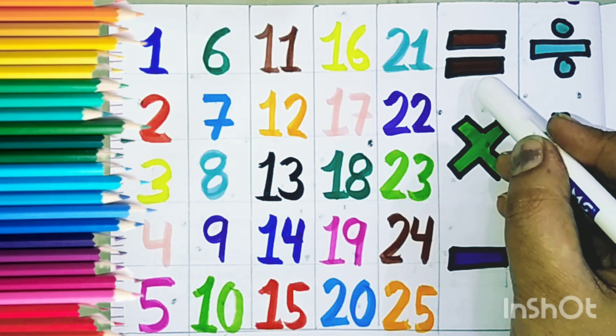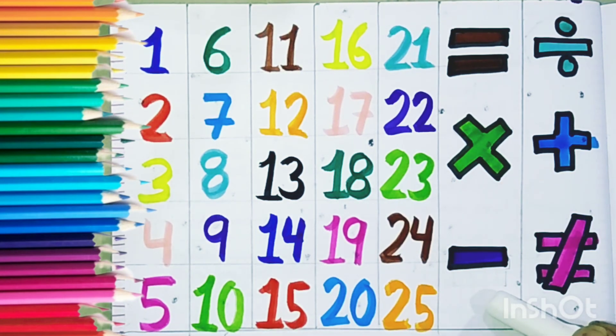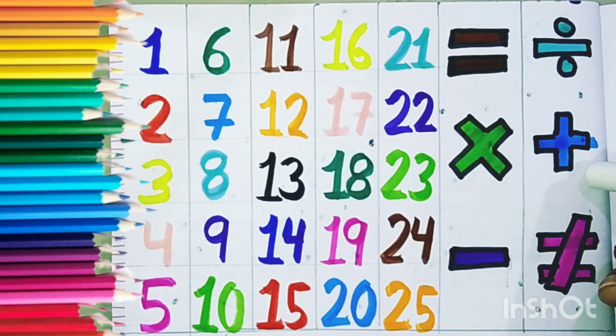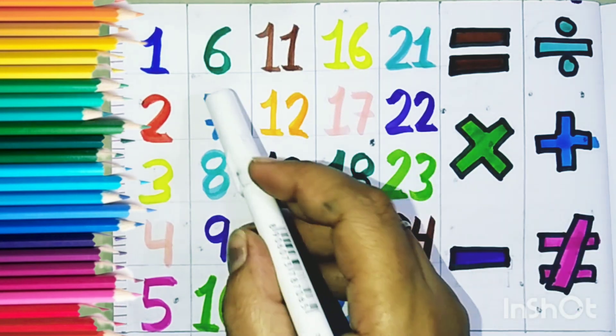This is equal to, multiply, minus, divide, plus, and not equal to. Let us learn the color.